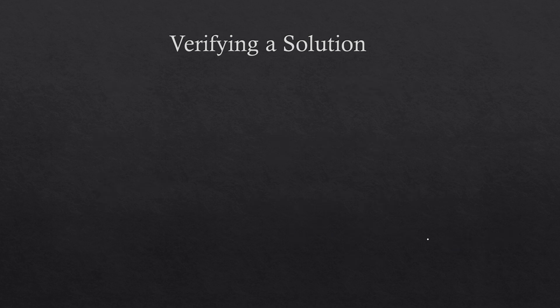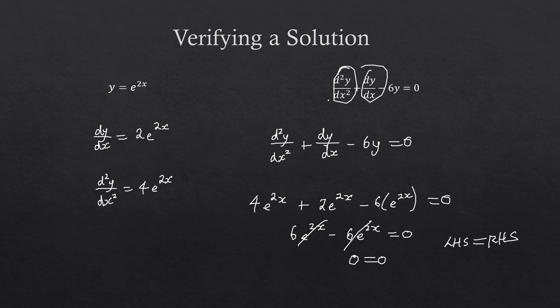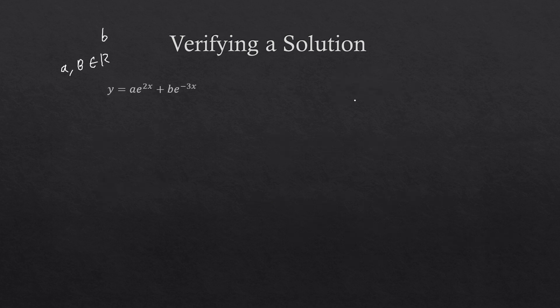Let's do this final example. Verify the solution that this is a solution — I'm assuming a and b are both constants (I'll use capital B so it doesn't look like a 6) — to this differential equation. It's actually identical to the previous differential equation, so there's more than one solution, but we're just verifying that this is a particular solution. I can see I need to find the second derivative and the first derivative.